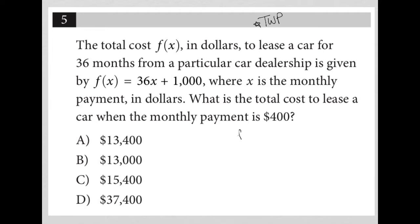I'm going to just rewrite it down here. F of x equals 36x plus 1,000 where x is the monthly payment in dollars. What is the total cost to lease a car when the monthly payment is $400?